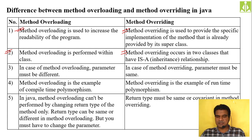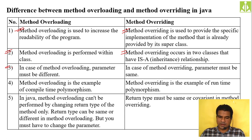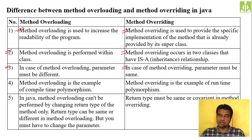Method overriding occurs between classes that have an IS-A relationship. In method overloading only the parameters must be different while the method names are the same. But in method overriding, both the method name and the parameters need to be the same — both in the parent class and in the child class.